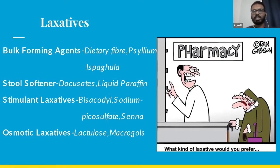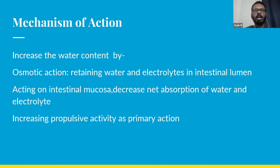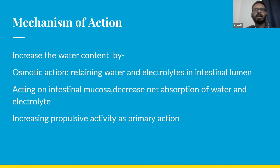The drugs used for managing constipation are called laxatives. Based on mechanism of action, laxatives can be categorized into bulk-forming agents like ispaghula and psyllium, stool softeners like docusates and liquid paraffin, stimulant laxatives like bisacodyl, sodium picosulfate, and senna, and osmotic laxatives like lactulose and macrogols. The mechanism of action of most laxatives is that they increase the water content of fecal material, either by osmotic action retaining water in the intestinal lumen, or by decreasing net absorption of water. Certain laxatives also increase propulsive activity as their primary mode of action. Most laxatives have a mixed mechanism of action.